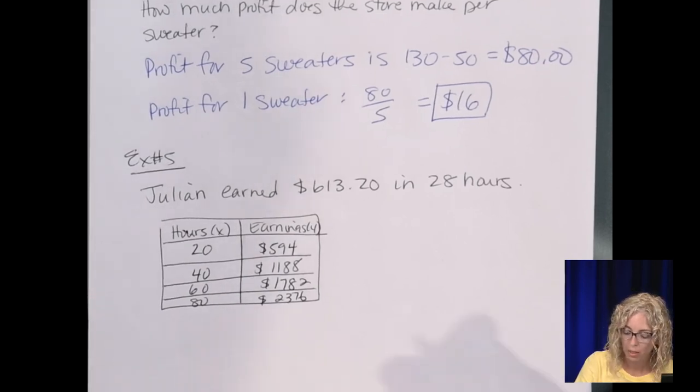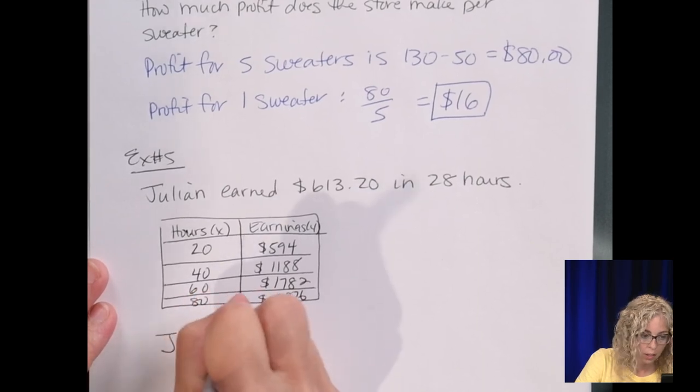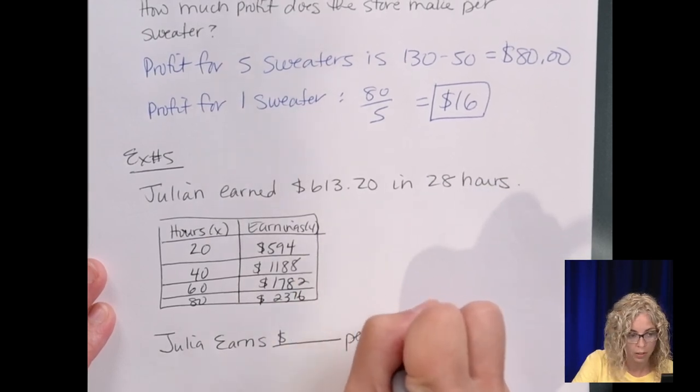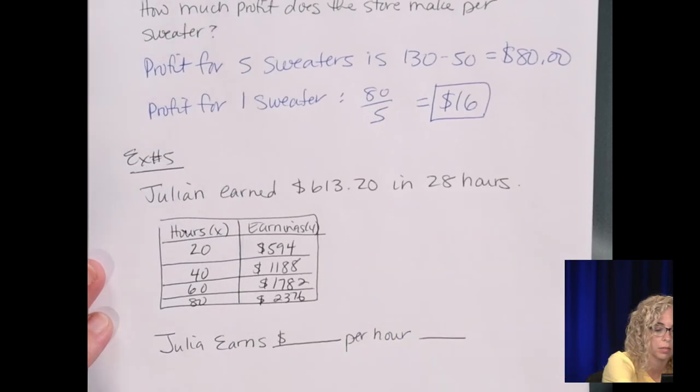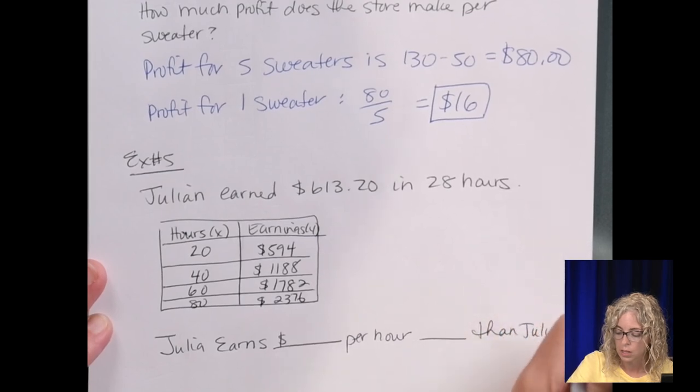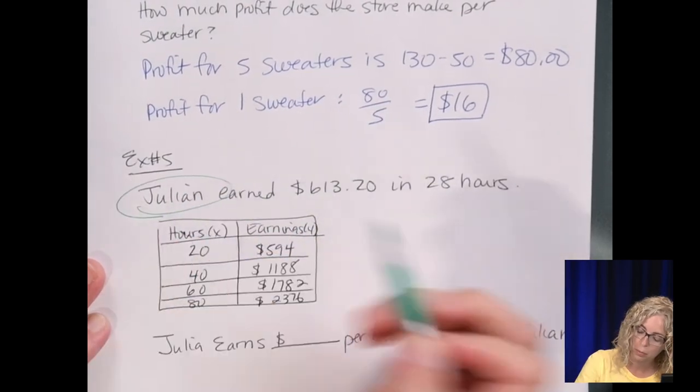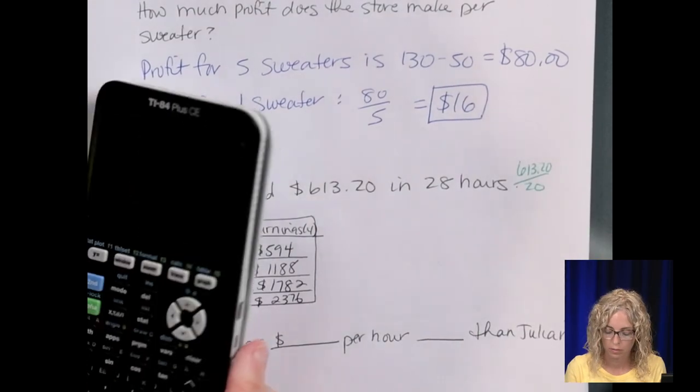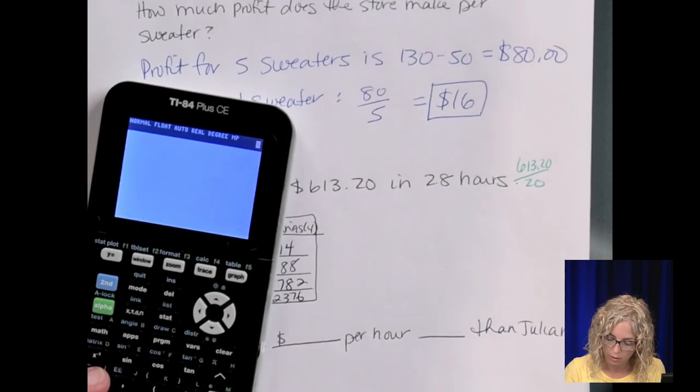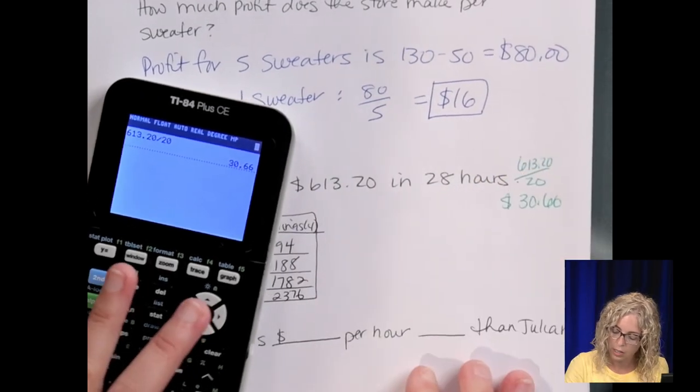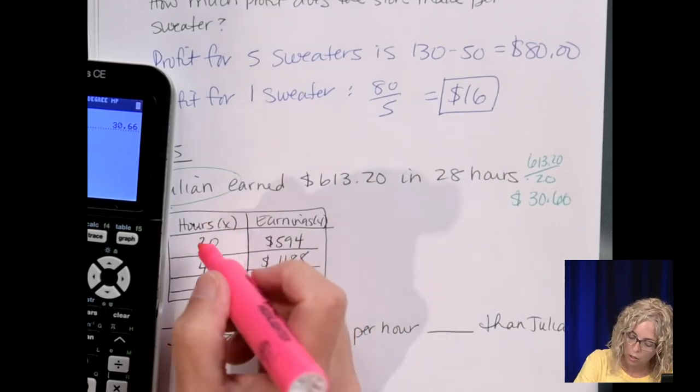And it says that Julia earns blank per hour, either more or less than Julian. So we have to find out how much Julian makes per hour. So that's going to be $613.20 divided by the 28 hours. And he makes $21.90 an hour.